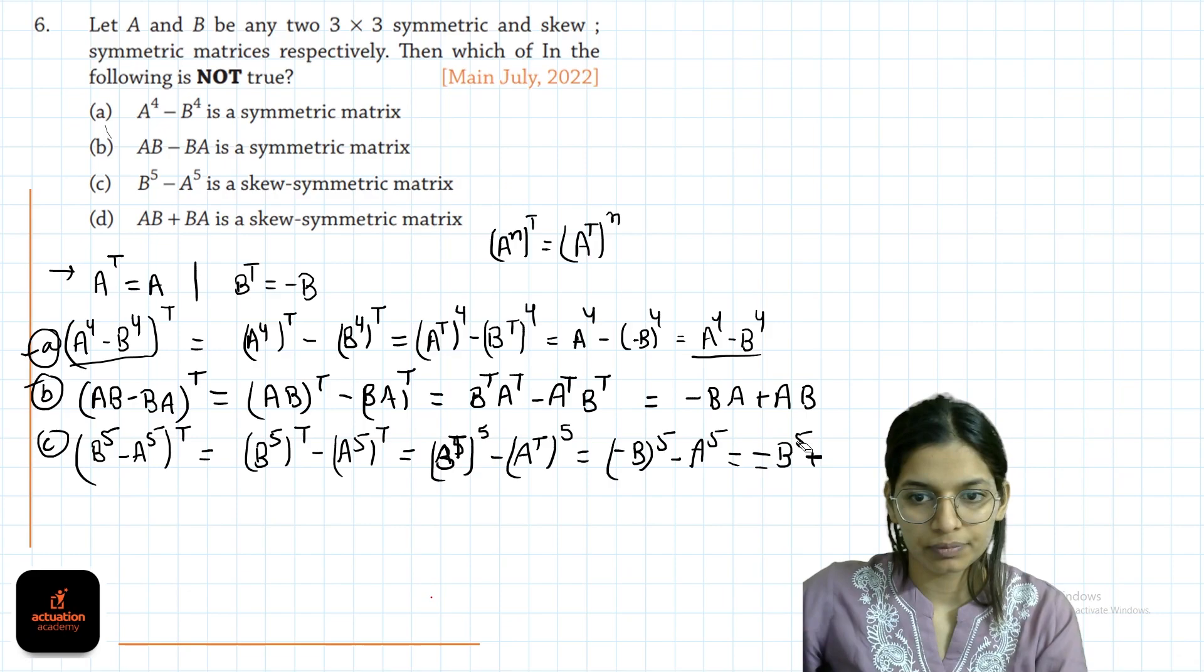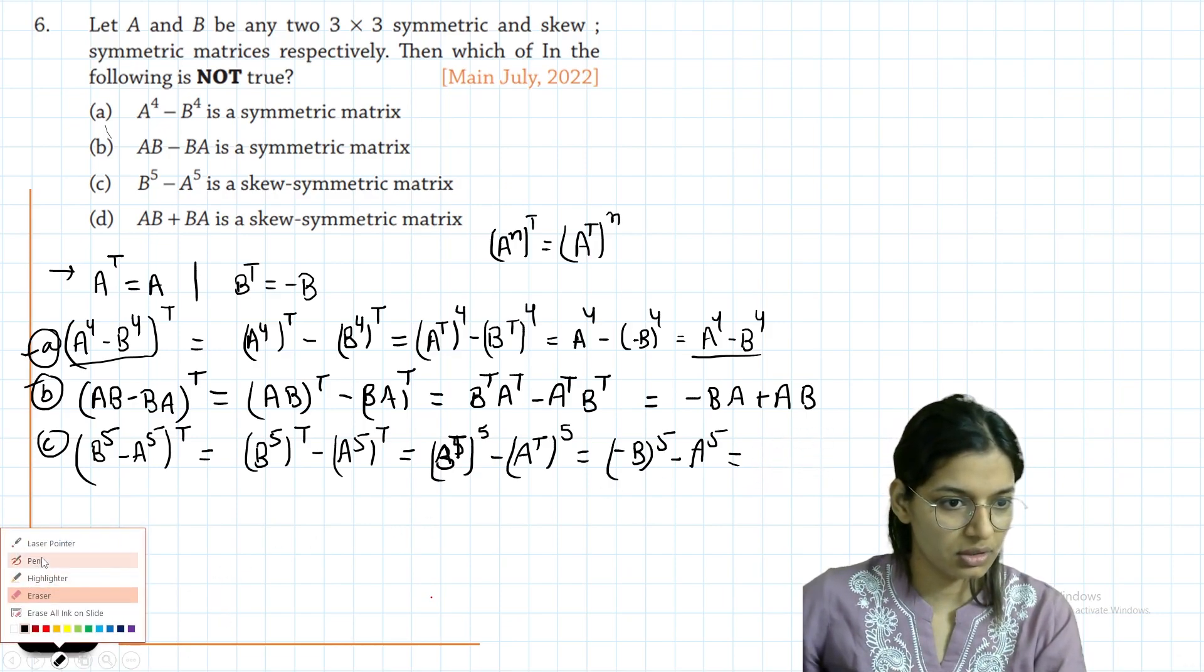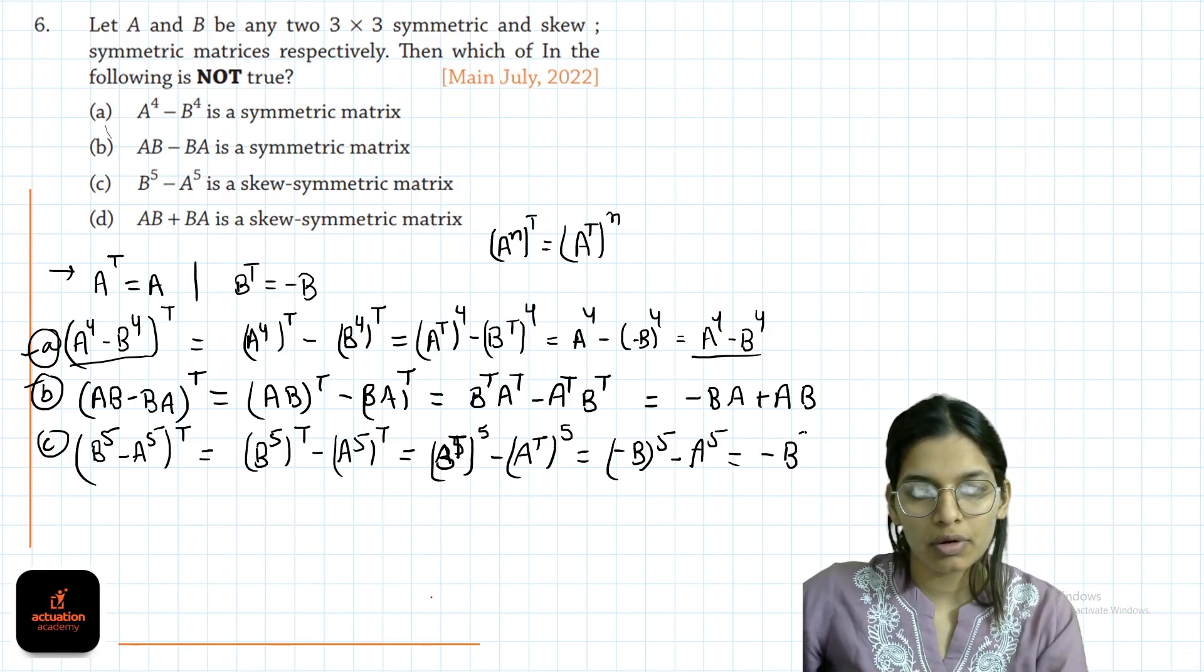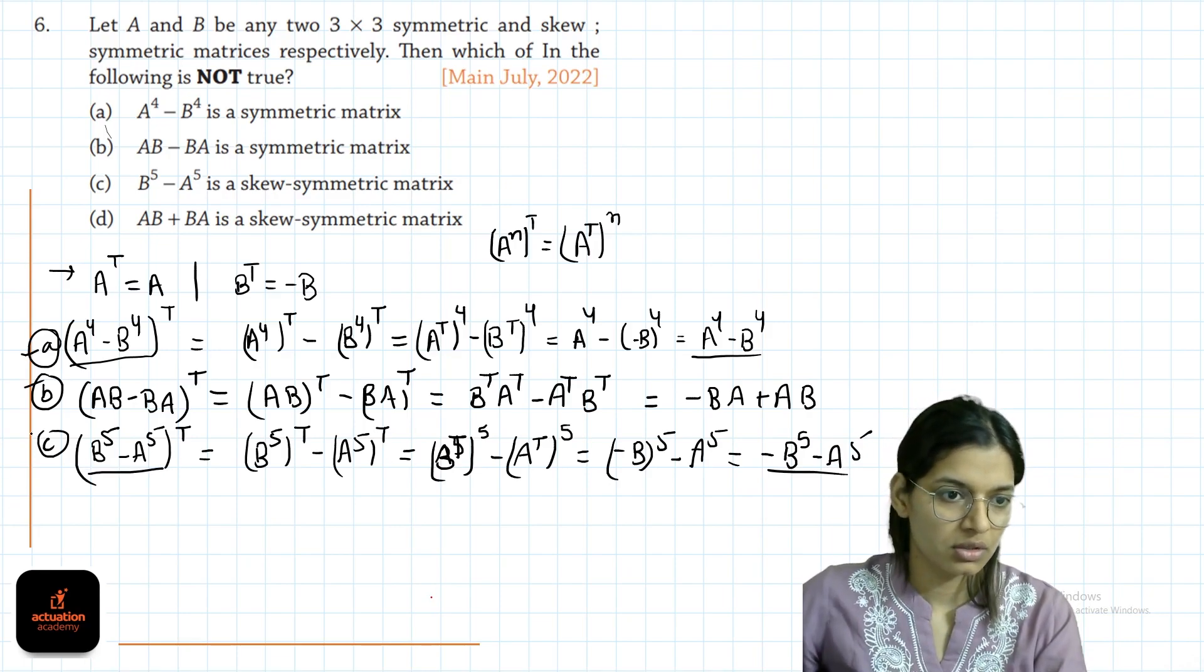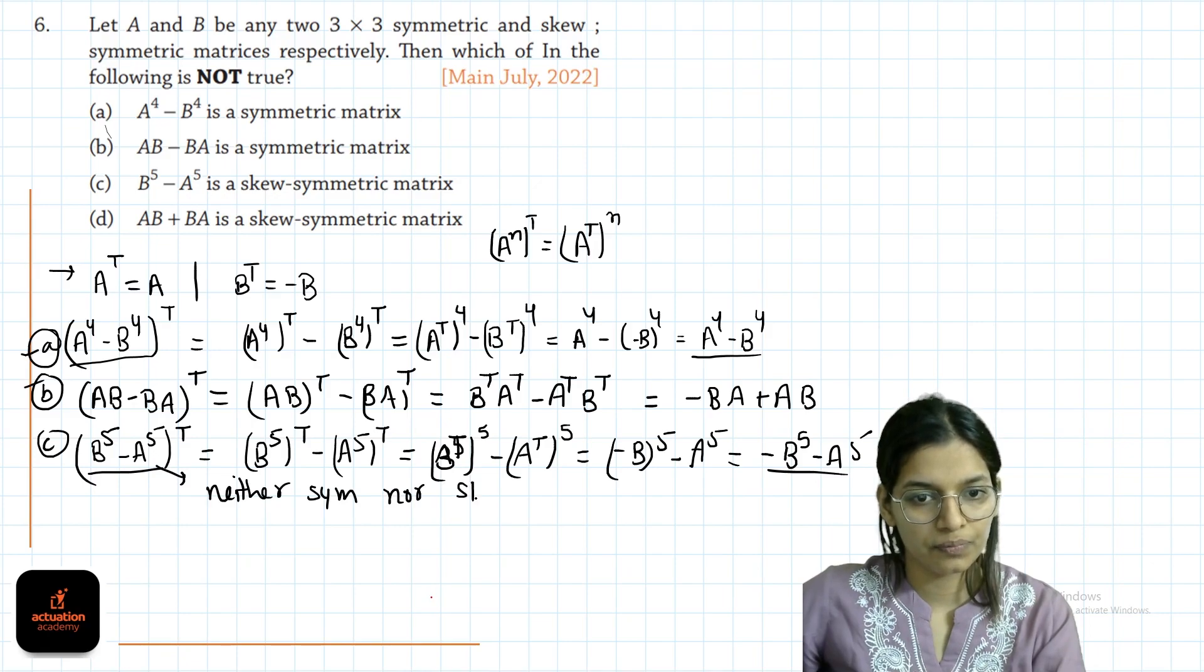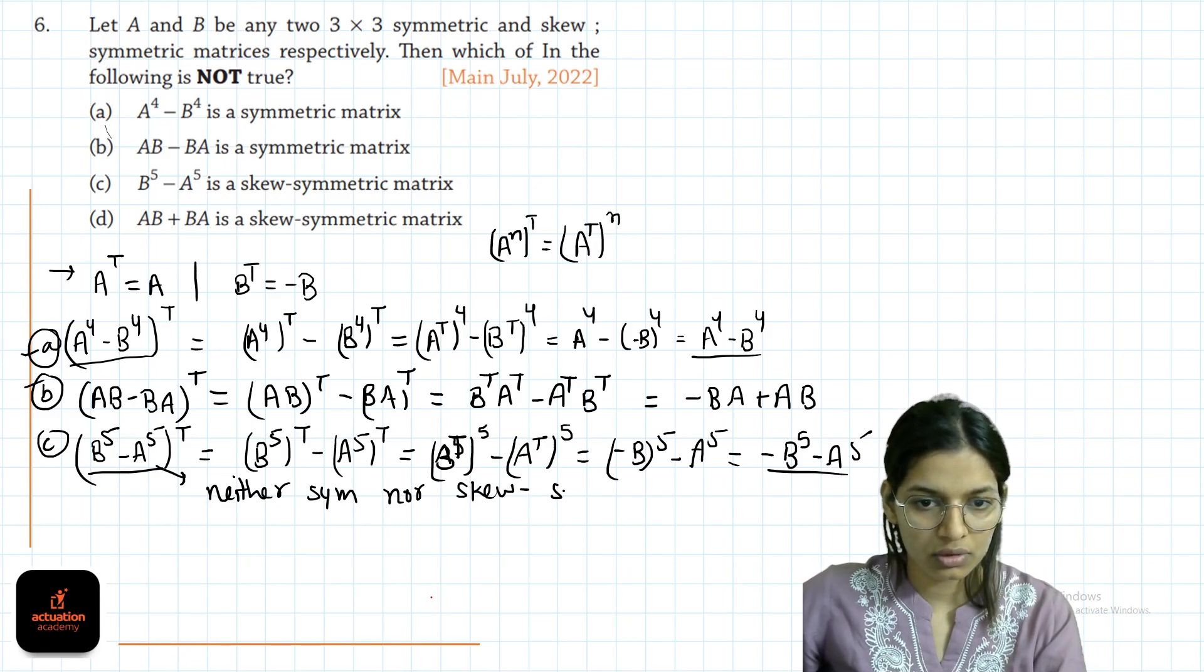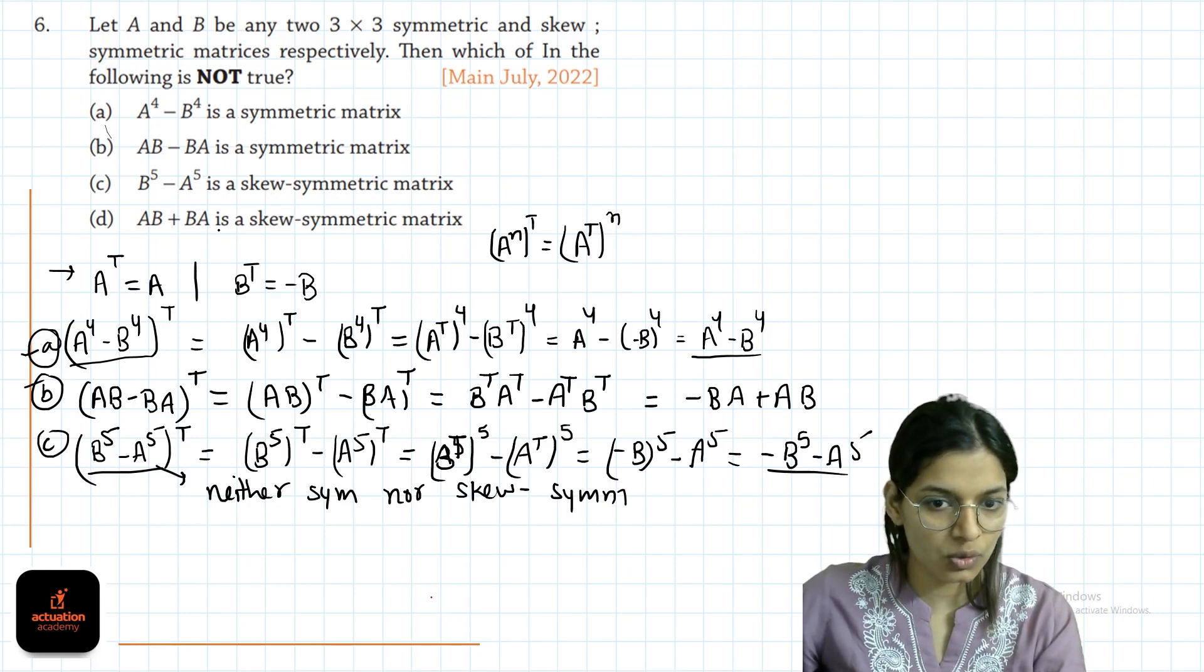Can we relate these two: minus B power 5 minus A power 5? There is no relation between this matrix and this matrix. So it is neither symmetric nor skew symmetric. They are saying this is skew symmetric, so this option is the wrong one.